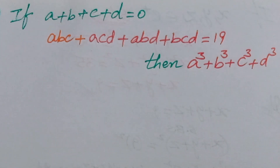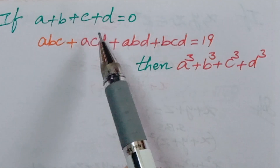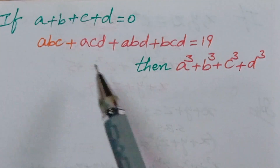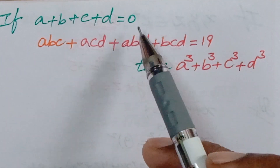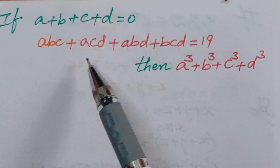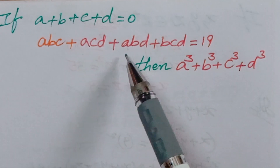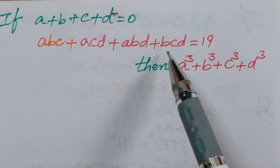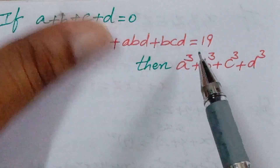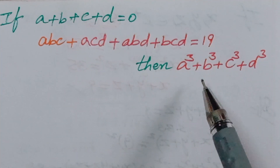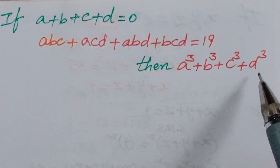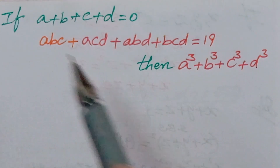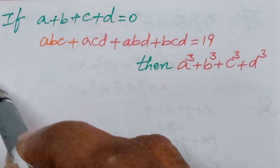Hello, welcome back to INCGMAX. Today we are looking at a logical problem. The problem is: if a + b + c + d = 0 and abc + acd + abd + bcd = 19, then find the value of a³ + b³ + c³ + d³. Some logic is there, that's why this problem is selected.